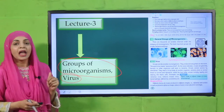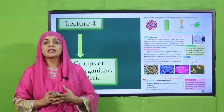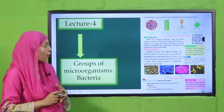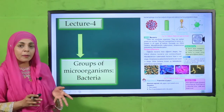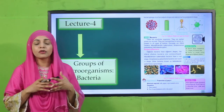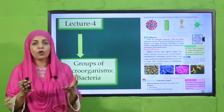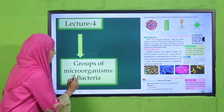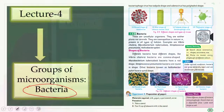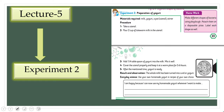Then we will move forward towards lecture number four. In lecture number four, because we are discussing different groups of microorganisms, we will discuss about bacteria — what are the different types of bacteria, how it looks like, and what are the different shapes. This will be discussed in lecture number four.